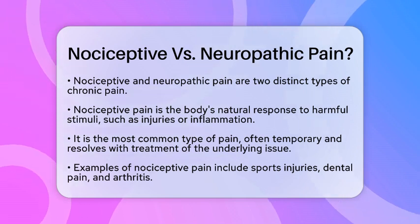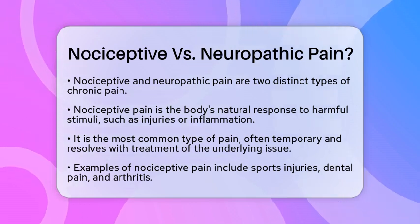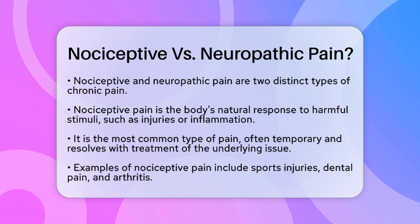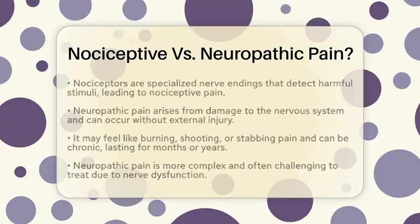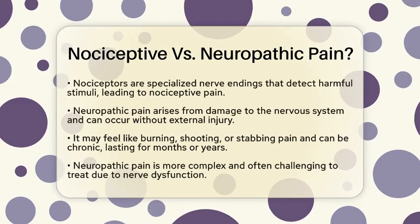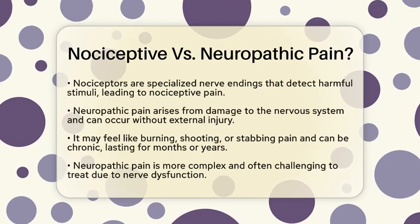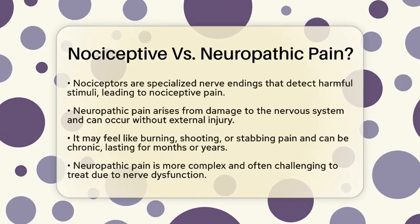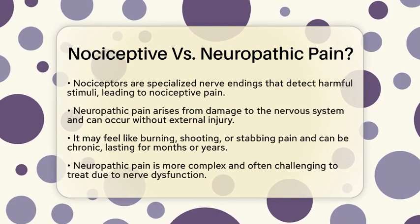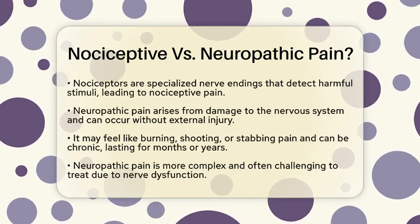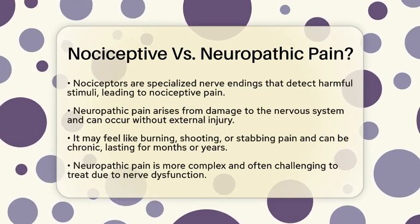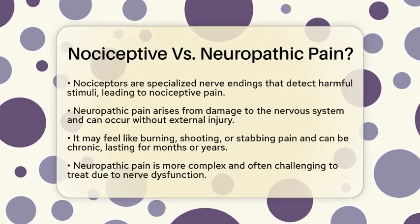Common examples include pain from sports injuries, dental work, or conditions like arthritis. On the other hand, neuropathic pain stems from damage to the nervous system itself. This can happen due to various reasons, including nerve compression, inflammation, or diseases that affect the nerves.